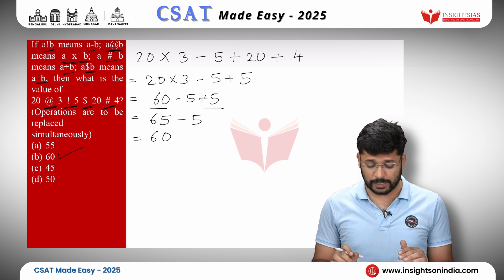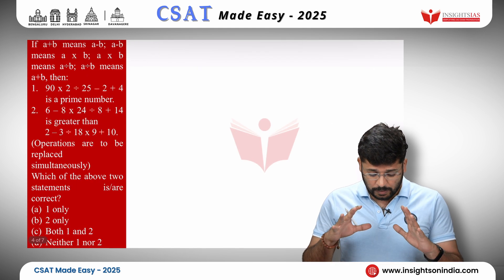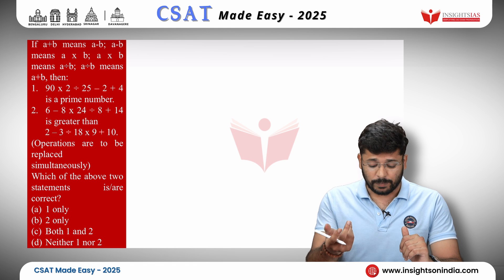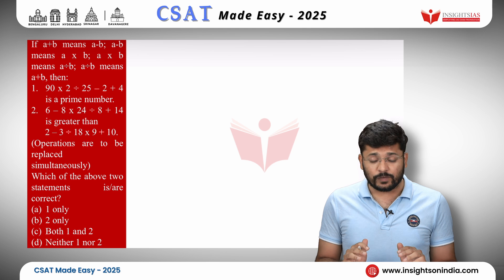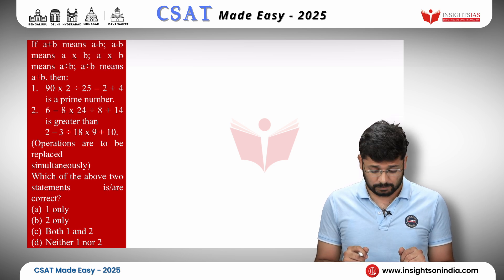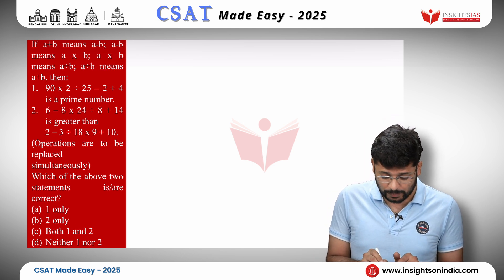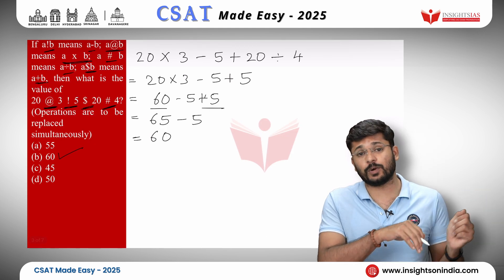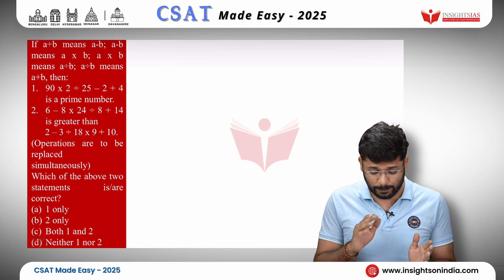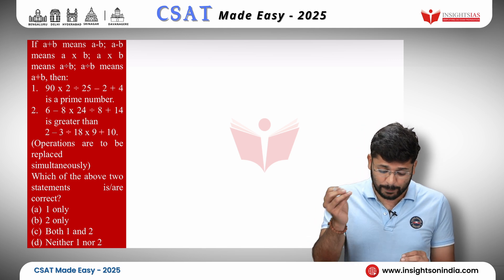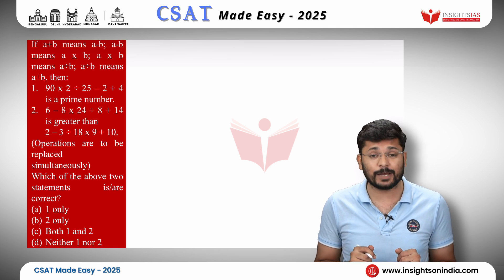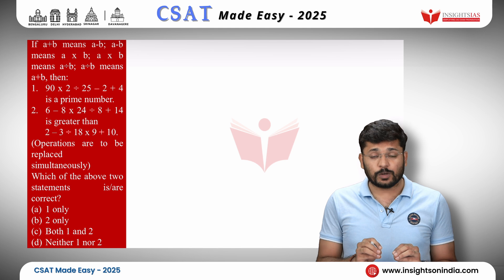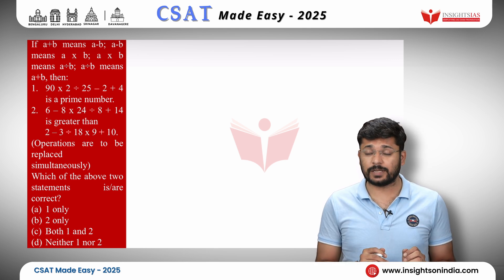Now we will look at another question — easy but one step ahead of CSAT level. Here the notations use the same symbols but with swapped meanings: A plus B means A minus B, A minus B means A into B, A into B means A divided by B, and A divided by B means A plus B. We should not get confused — we use the same method as before.